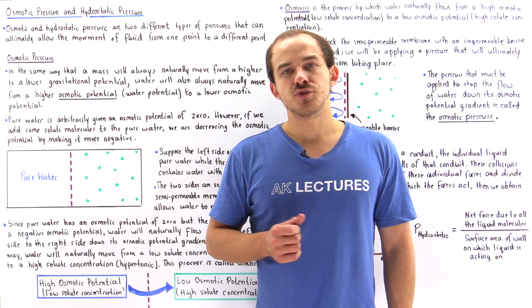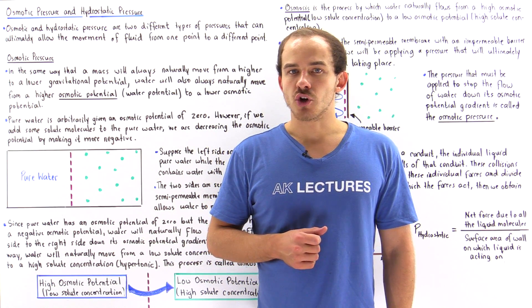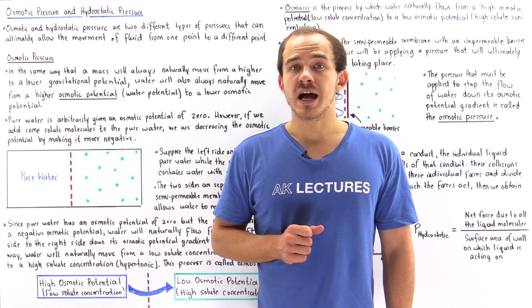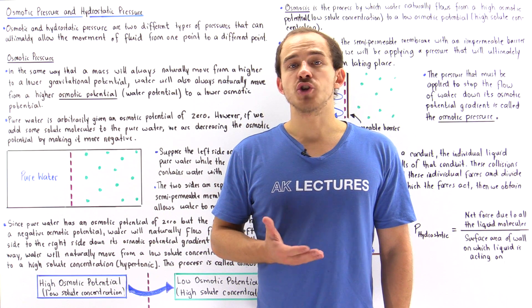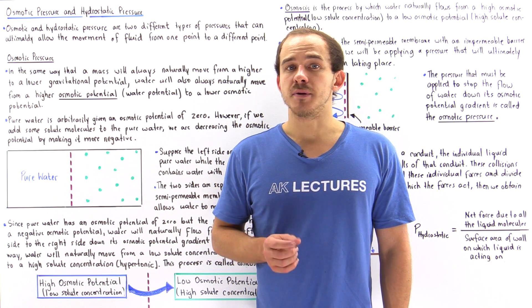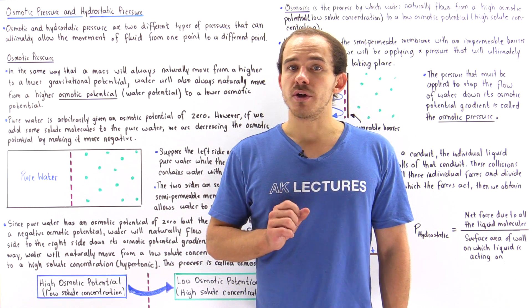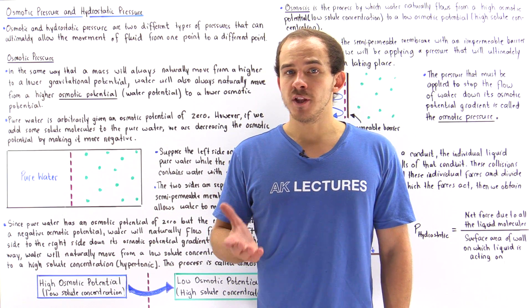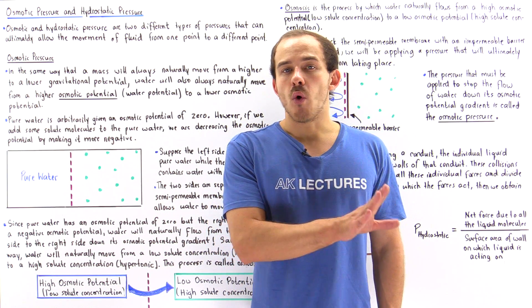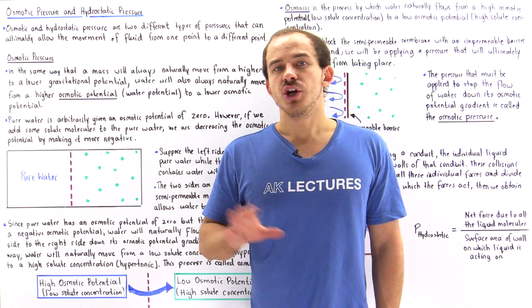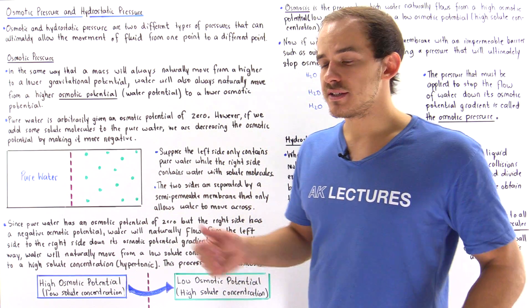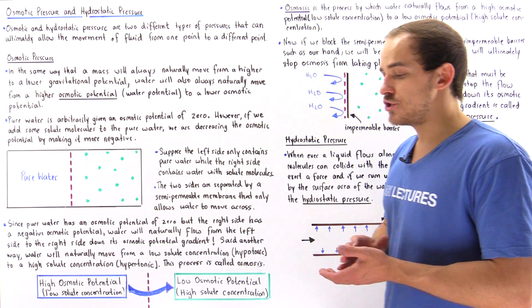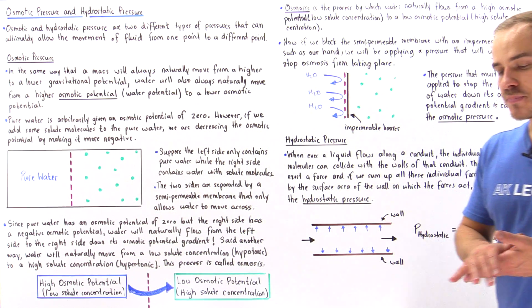Osmotic and hydrostatic pressure are two different types of fluid pressures which are responsible for allowing the movement of fluid from one location to a different location within some given region of space.